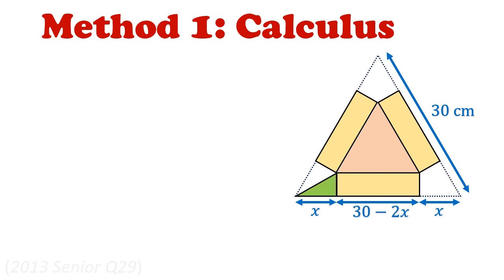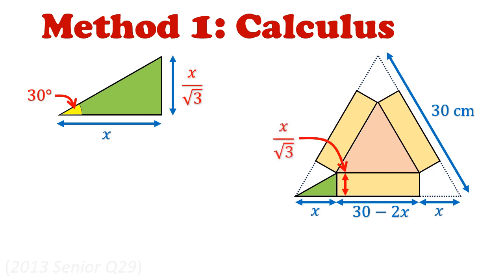We're going to focus on this green right angle triangle. Notice that the yellow angle here is half of the base angle of the equilateral triangle, so it's half of 60 degrees, so 30 degrees. Since it's a right angle triangle, we can apply trigonometric ratios. So the height of this green triangle will be x tangent 30 degrees or x over square root of 3. This is useful because this tells us the height of the box when we fold the net.